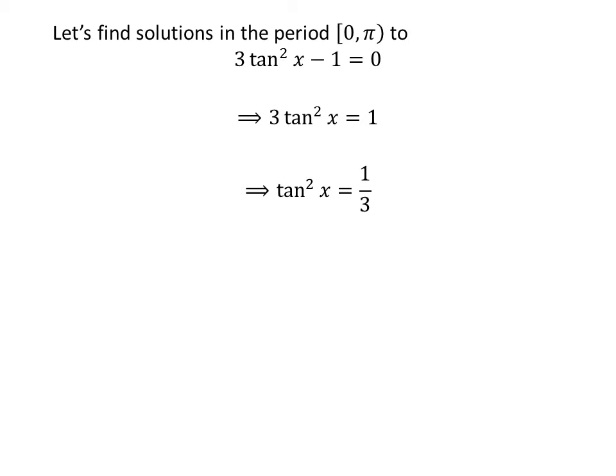Dividing the whole expression by 3 gives us square of tangent of x is equal to 1 upon 3. Taking the square root gives us tangent of x is equal to plus and minus 1 upon square root of 3. Rationalizing the denominator by multiplying numerator and denominator by square root of 3, the expression becomes tangent of x is equal to plus and minus square root of 3 upon 3.